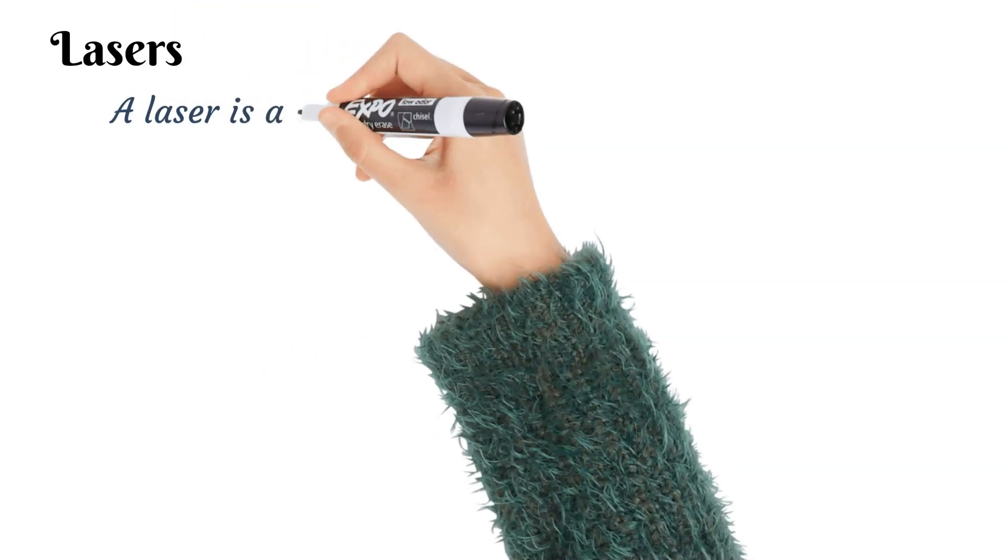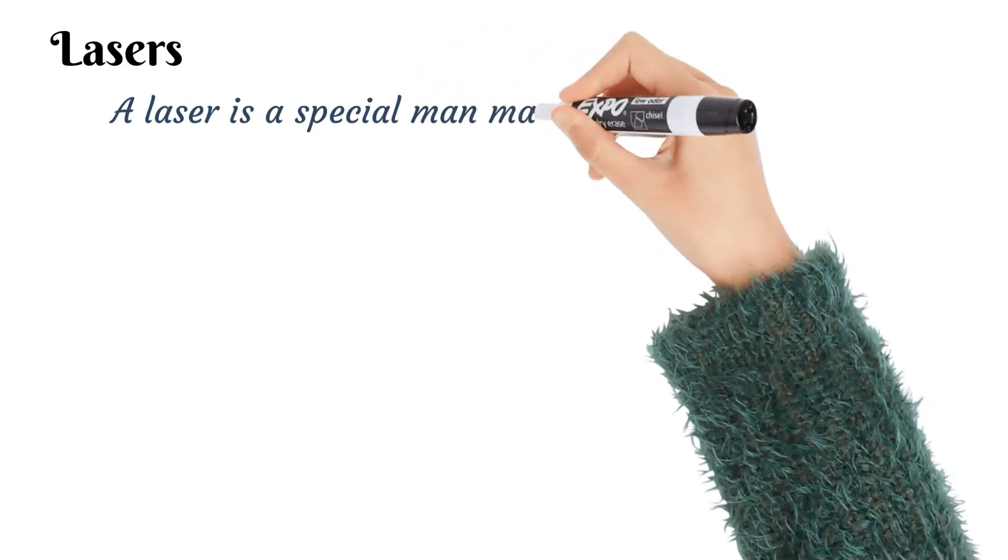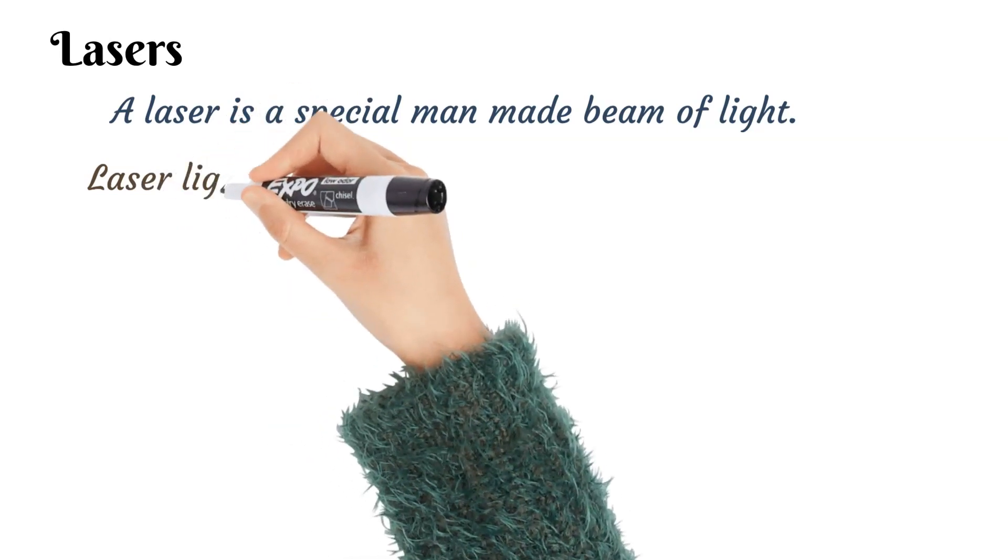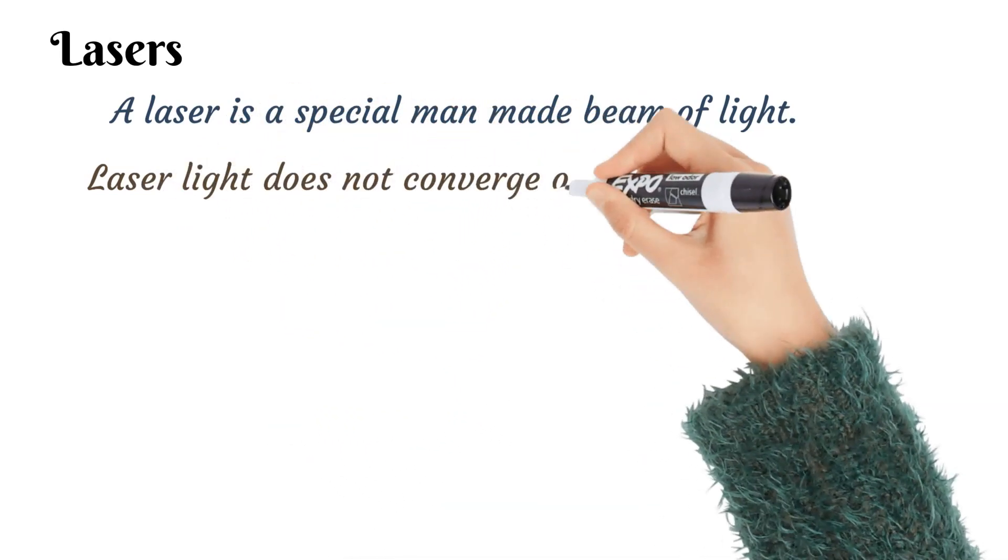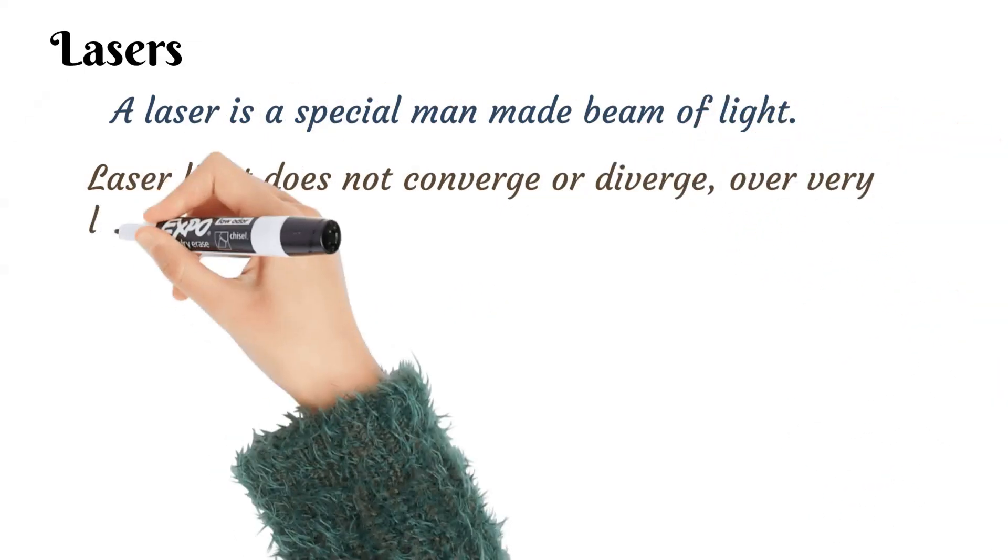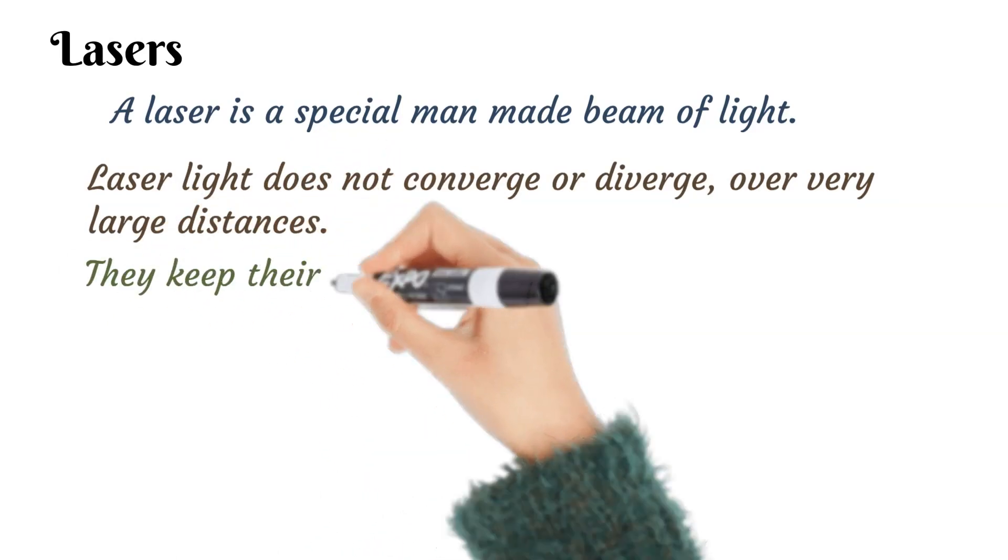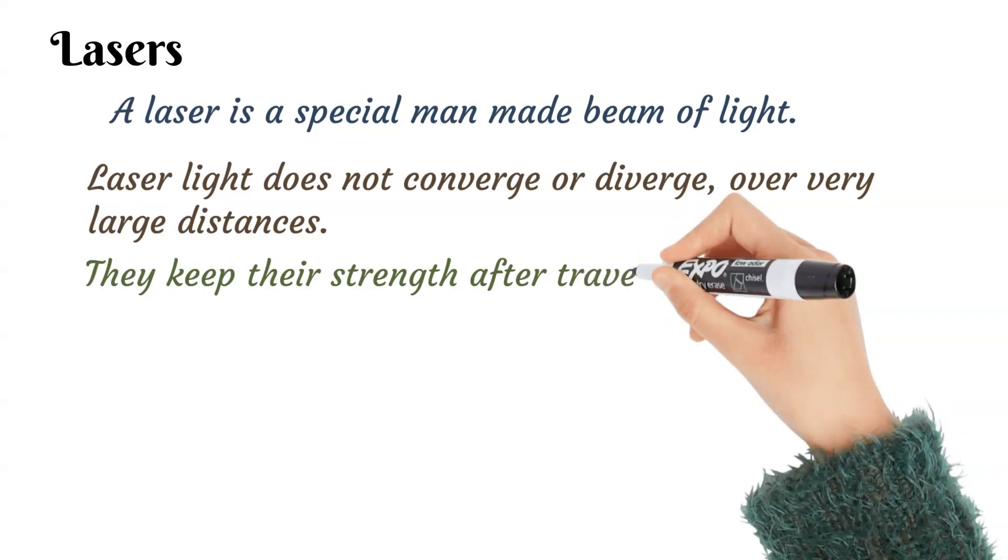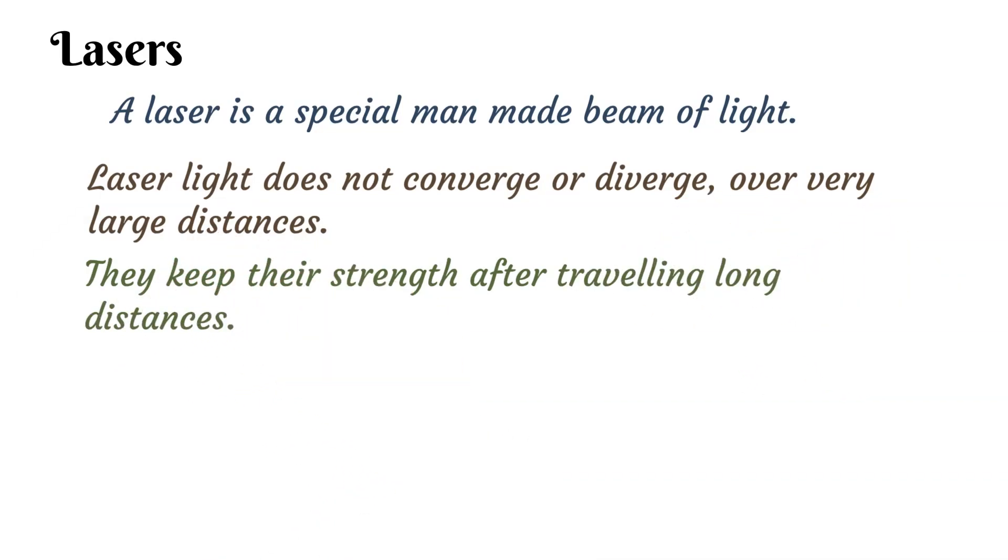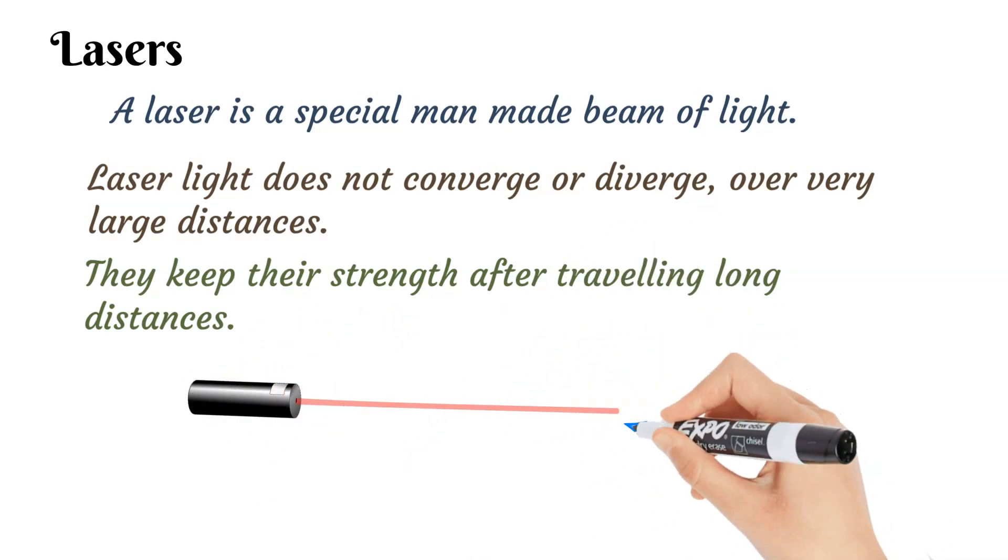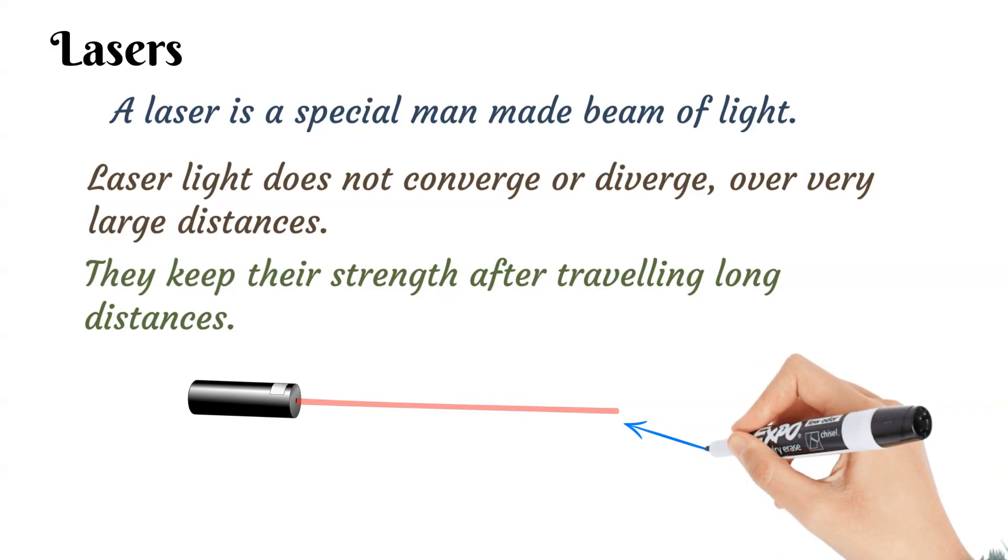Let's look at lasers. Lasers are special man-made beams of light. Laser light do not converge or diverge. They can travel a very long distance without converging. They keep their strength after traveling long distances. You can see a simple laser light below.